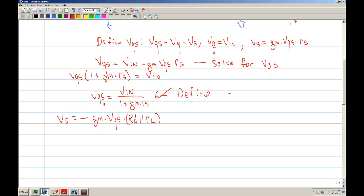So we're almost there. Now we substitute that in there. And then we can say it's negative GM VN times RD in parallel with RL divided by one plus GM RS.